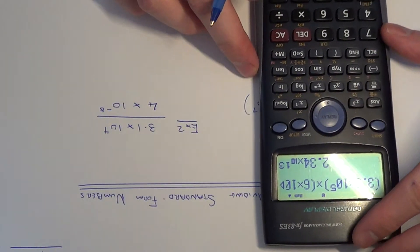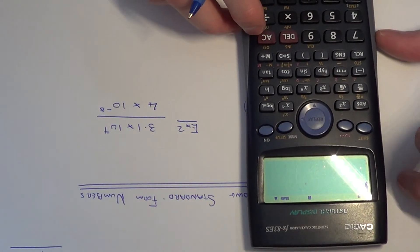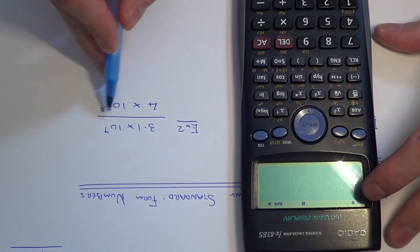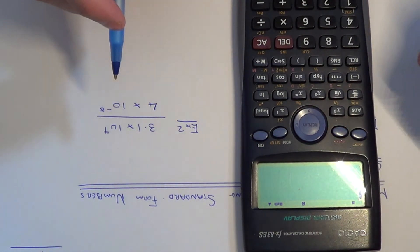So let's look at example 2. This time we have 3.1 times 10 to the power 4, and we are dividing by 4 times 10 to the power minus 8.